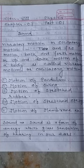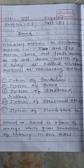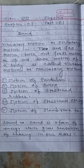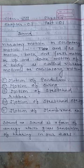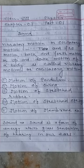Before knowing about sound, we must learn vibratory motion or oscillatory motion. To and fro motion, back and forth motion, or up and down motion of a body is called vibratory motion or oscillatory motion.